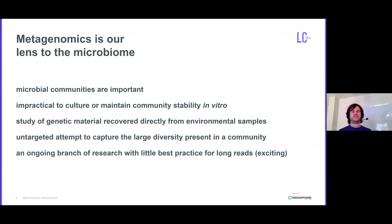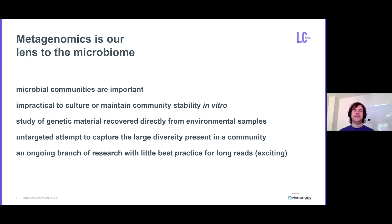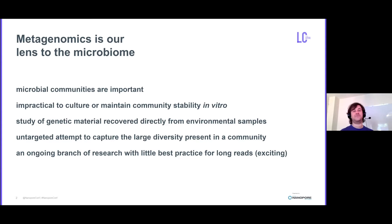If you're not sure what metagenomics is, we know that microbial communities are important. They change our health and well-being, they affect our development, they can modulate their own environment. So we're very interested in seeing what the genomes in these communities look like. But it's impractical to culture all of the individual organisms in a community, and it's also very difficult to maintain an entire community's stability in the lab. So you can think of metagenomics as the study of genetic material recovered directly from an environmental sample — an untargeted attempt to capture the diversity present within a community of interest. This is an ongoing branch of research with little best practice for long reads, so it's a very exciting time.